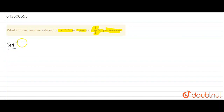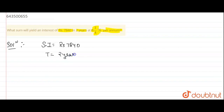Sum means the principal. In the question, we are given with simple interest which is Rs. 7840, the time is 2 years, and the rate is 6 and 1/4, which we can also write as 25 upon 4.